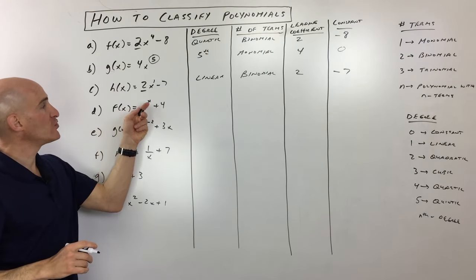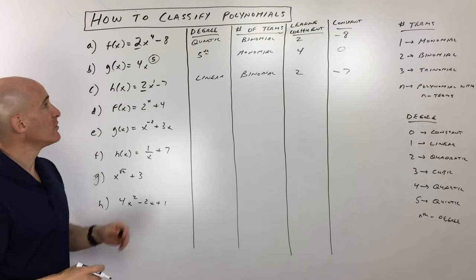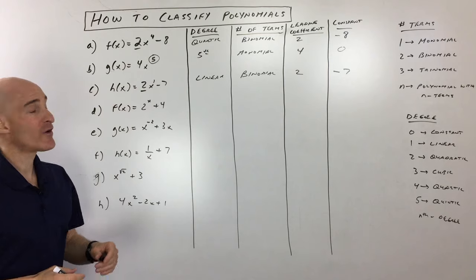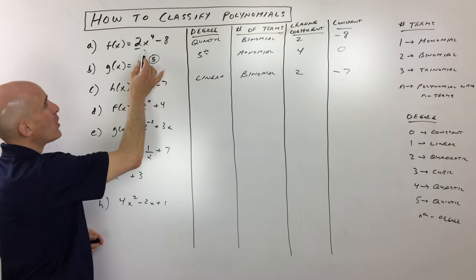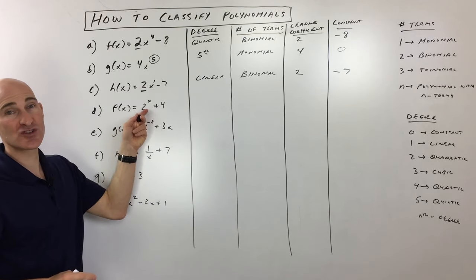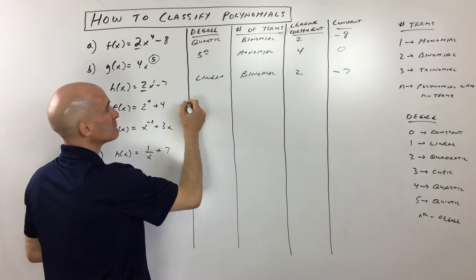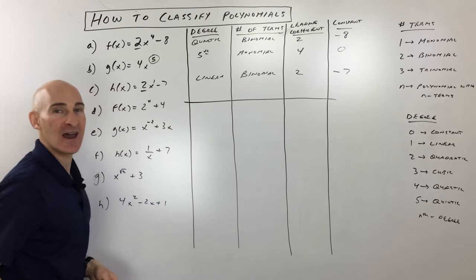The next one, f(x) equals 2 to the x plus 4. Now, this one is not considered a polynomial. When you look at these polynomials we've worked with so far, notice that the variable is always in the base. You never have the variable in the exponent position. This is actually called an exponential function. So this is not a polynomial. We're just going to cross right through that one. Not applicable.